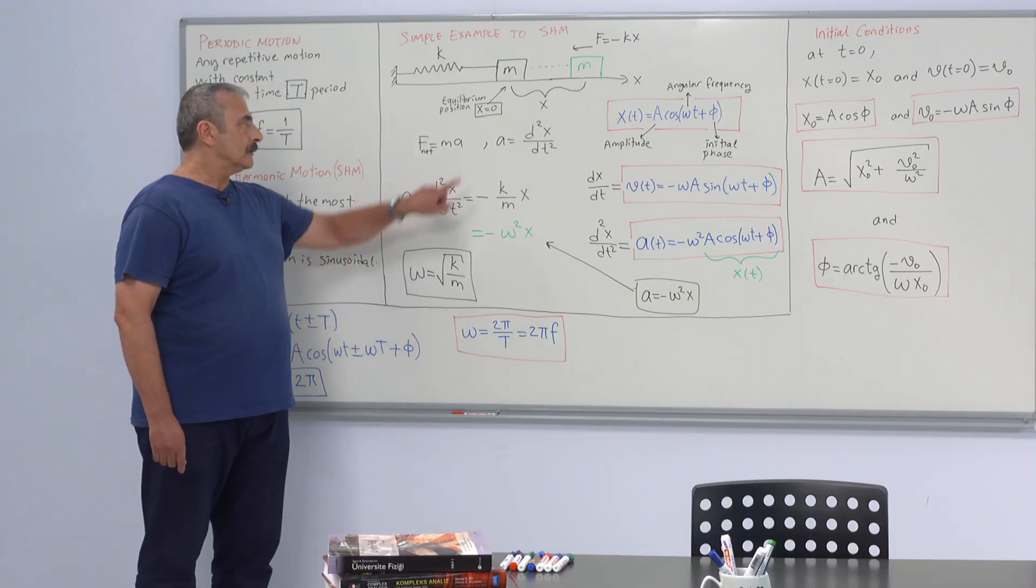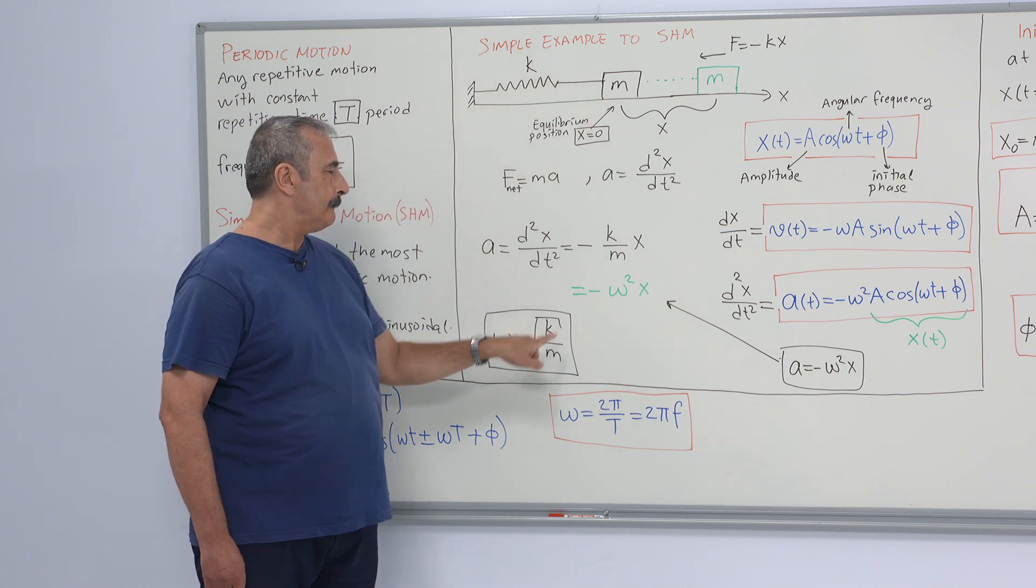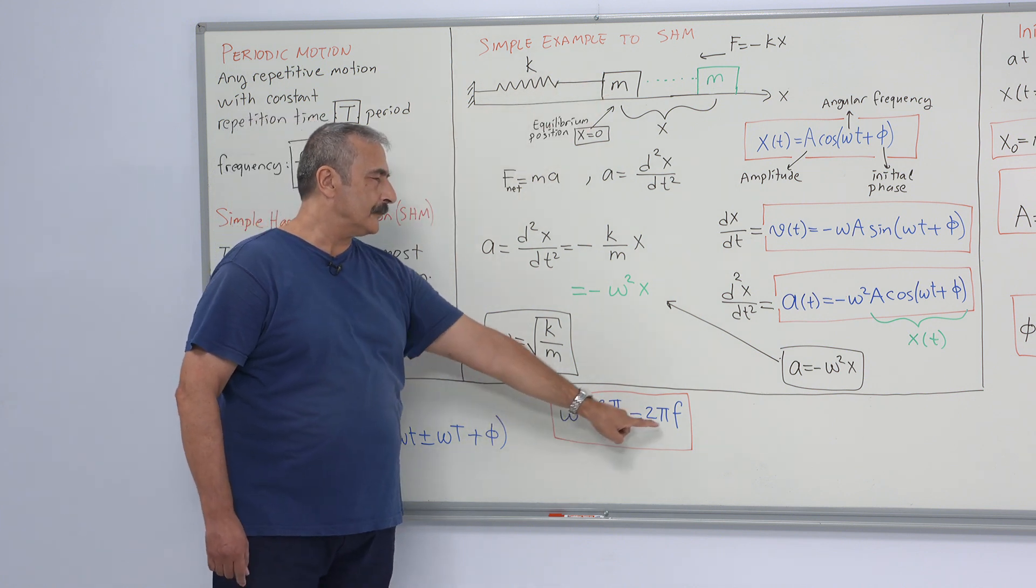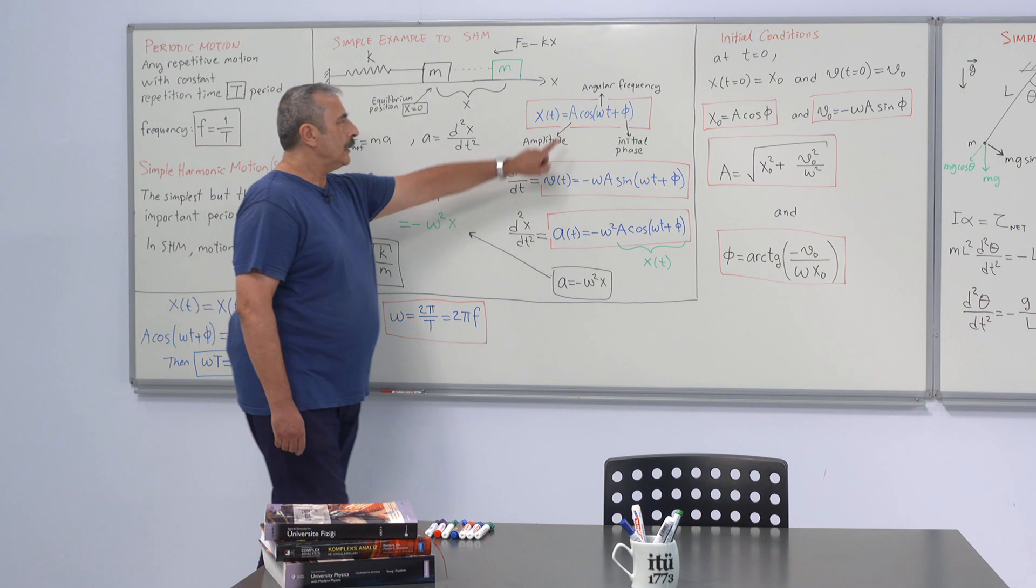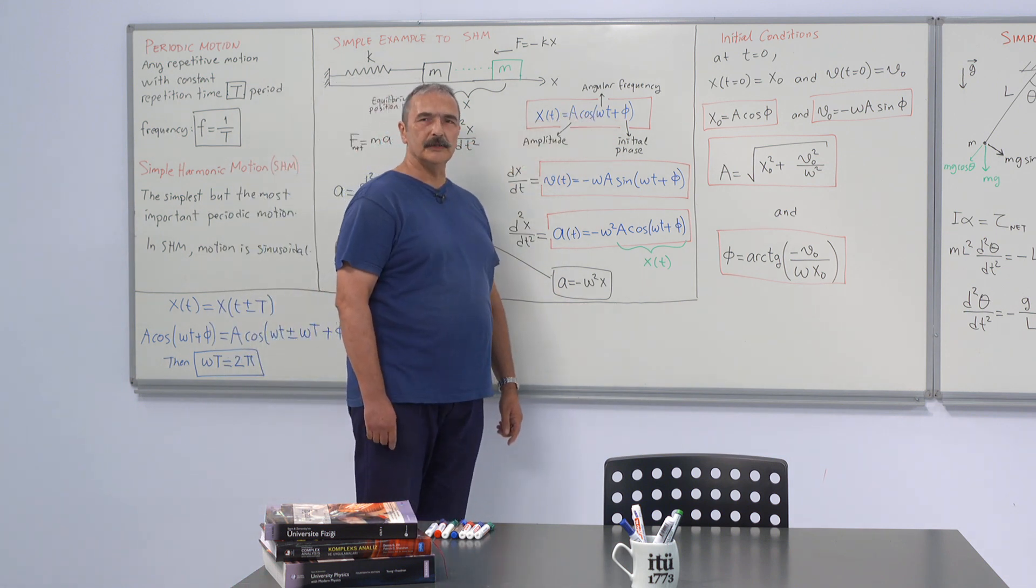Angular frequency is determined by the physical conditions of the system, k and m, also the period and the frequency. As for A and phi, they are determined from the initial conditions.